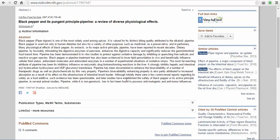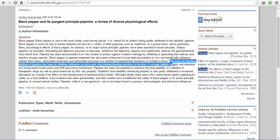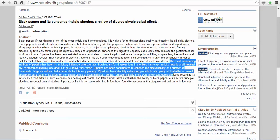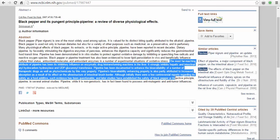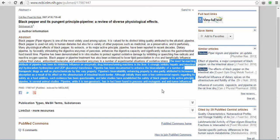I just wanted to highlight some of the things that are in here. It says the most far-reaching attribute of piperine has been its inhibitory influence on enzymatic drug biotransforming reactions in the liver, basically meaning that it's helping the liver to process this stuff faster and get it into the bloodstream. It strongly inhibits hepatic and intestinal aryl hydrocarbon hydroxylase and UDP-glucuronosyltransferase.